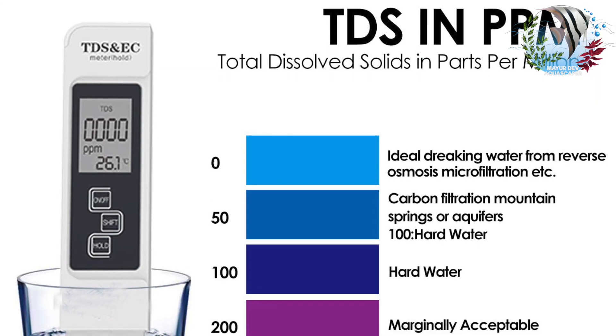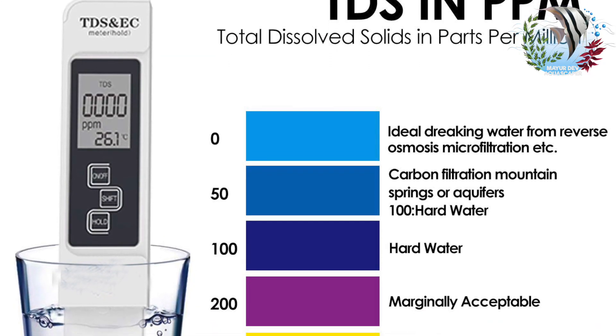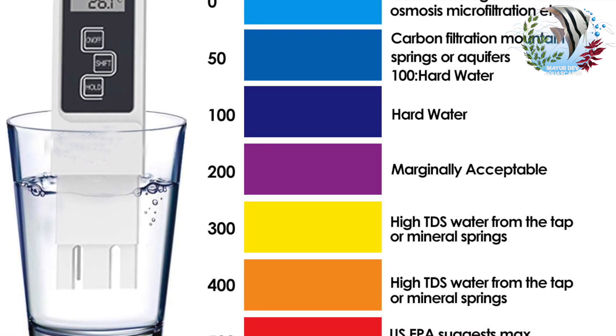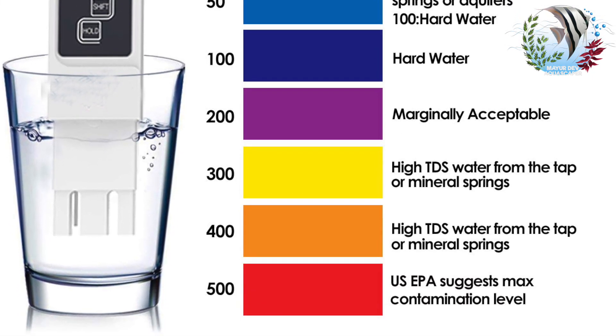Many hobbyists have a particular TDS number they say should not be exceeded. The reason for having a lower TDS is that you have fewer unknowns in your water. If your TDS is low, salts are low and solids are low — and when your solids are low, it's safer.